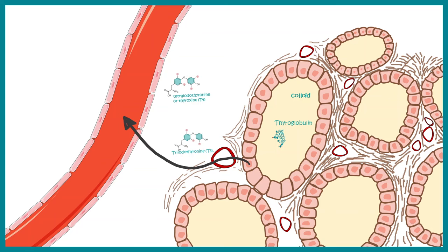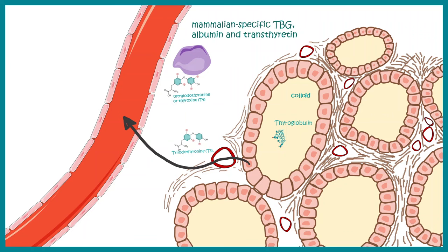Inside the bloodstream, these hormones do not travel alone. A very small fraction moves freely, but the large fraction is complexed with carrier proteins such as TBG (thyroid-binding globulin), albumin, or transthyretin. Complexed with these carriers, the hormones are delivered to the locations where they are required.